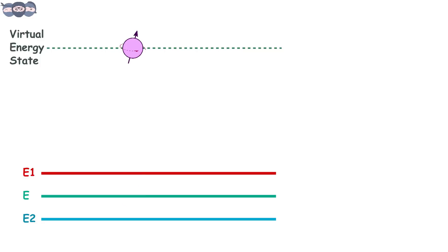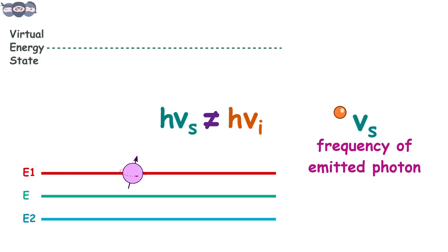However, sometimes electrons, when losing energy from the virtual state, can fall back to a different vibrational level. In this case, the energy lost by the electron is different than the energy absorbed from the incident photon. As a result, the photon emitted by the electron has energy different than the incident photon. This is possible when the frequency of the emitted photon is different than the incident photon. This gives rise to Raman scattering.